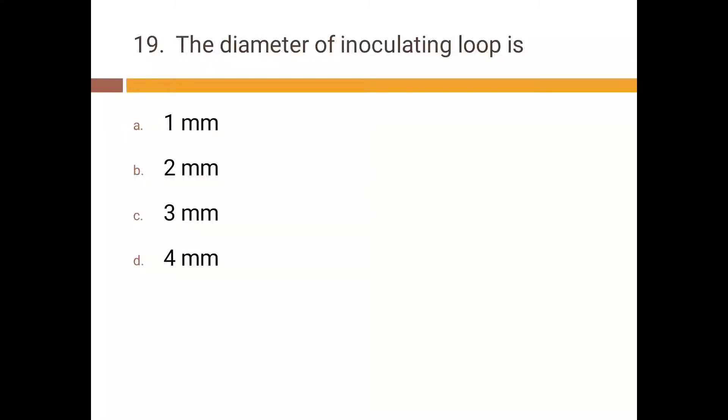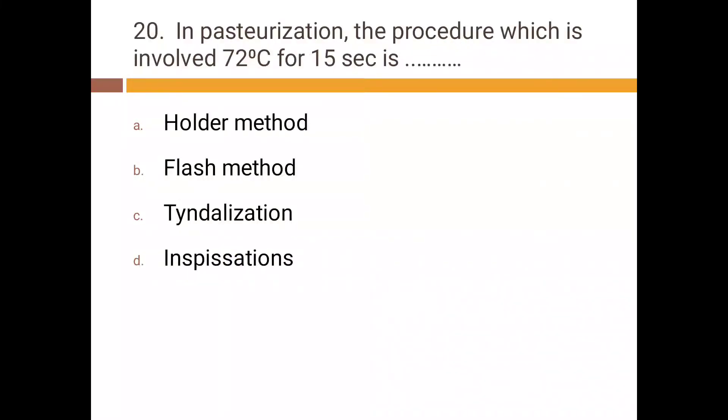The diameter of inoculating loop is: a) 1 mm, b) 2 mm, c) 3 mm, d) 4 mm. Correct answer is d) 4 mm.